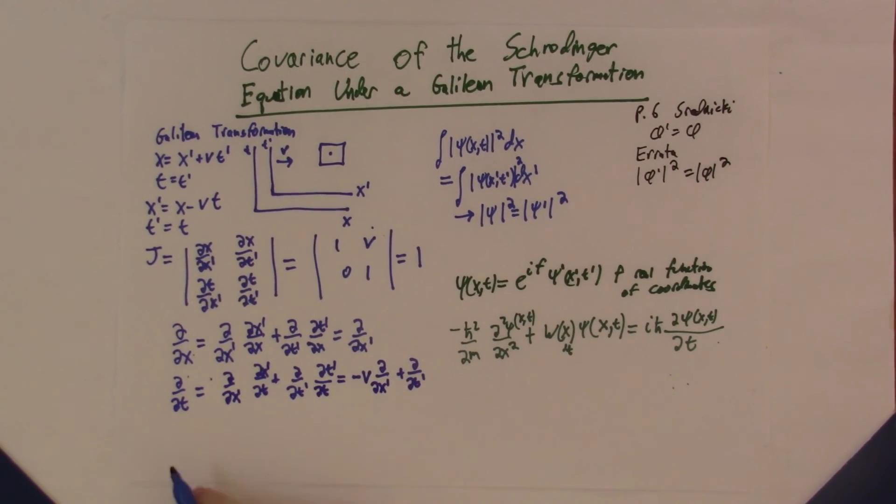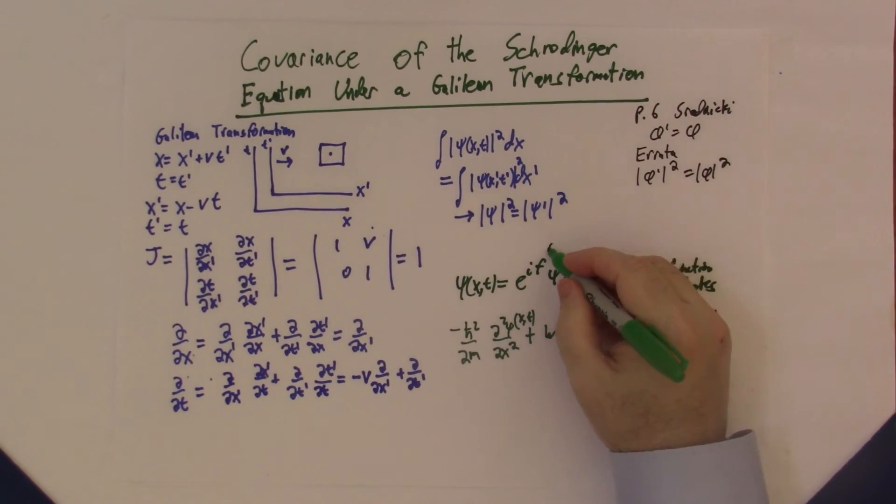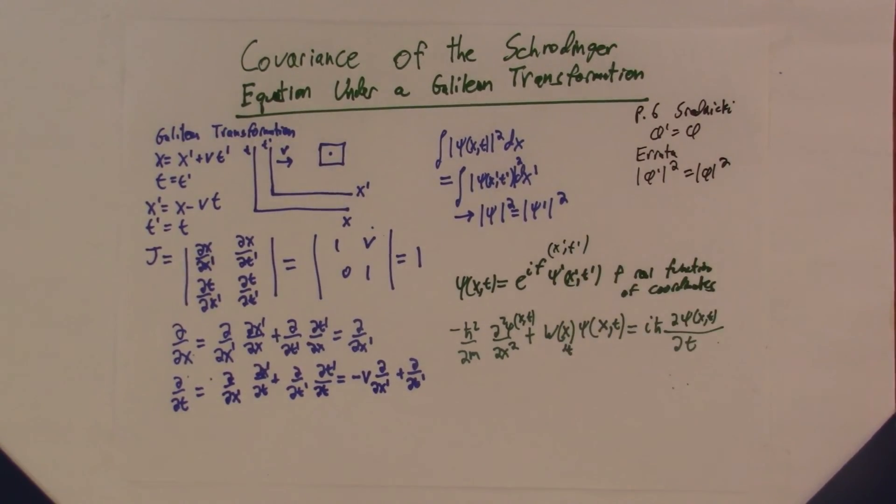This equals -v times ∂/∂x' plus ∂/∂t'. So this equation here is nothing other than the co-moving derivative that you might have seen in fluid mechanics and elsewhere in classical mechanics. So in the next video, we're going to do the brute force math. That's all it is. We'll substitute using these derivatives and this expression for ψ. And f over here will be a function of x' and t'. We'll see if we can get the Schrödinger equation in the primed coordinate system. If we do, then we'll have covariance. Thank you very much. I'll see you in the next video.